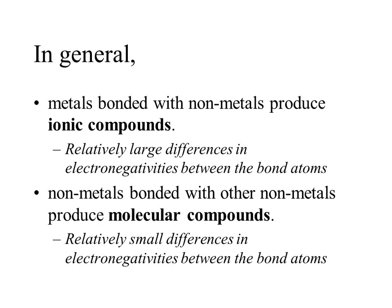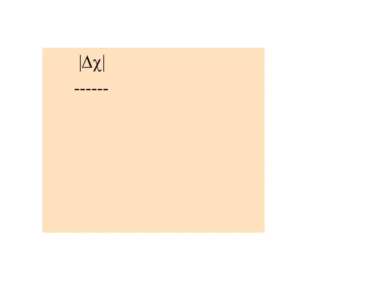It only takes one ionic bond to make it an ionic compound. Most chemical bonds in some compounds are covalent, but if even one is ionic, the whole compound is ionic. For those going into life sciences, it's amazing the chemistry you can get out of oxygen, carbon, and hydrogen — those would all be molecular compounds.